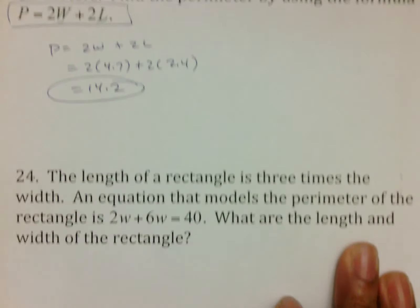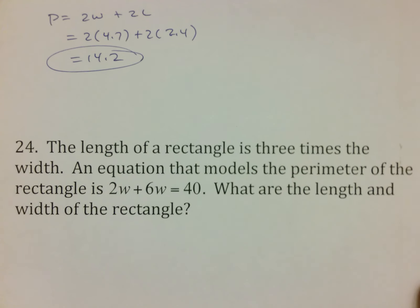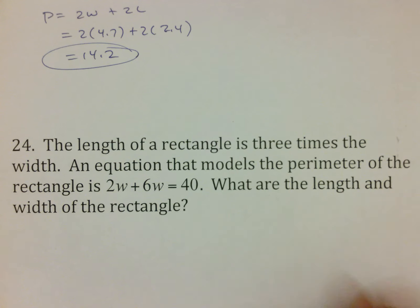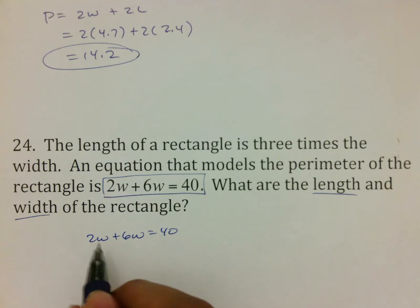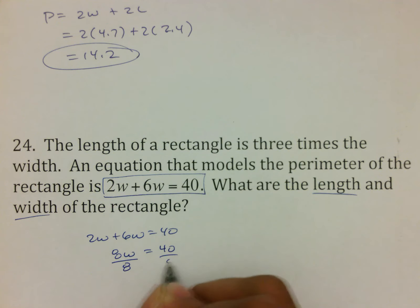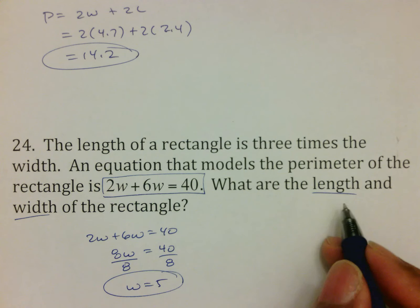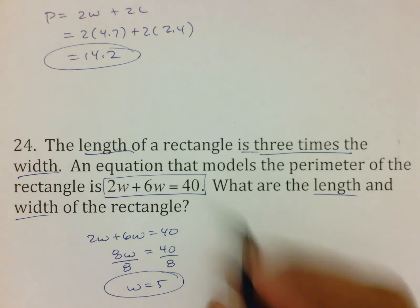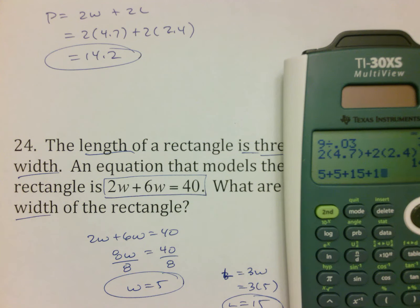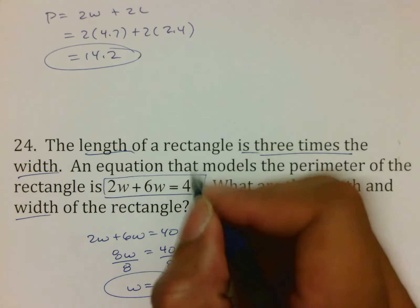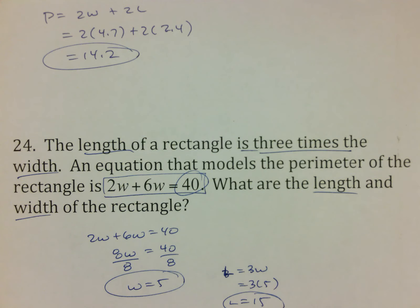The last question for this worksheet. Length of a rectangle is 3 times the width. An equation that models the perimeter is 2w plus 6w equals 40. They want length and width of the rectangle. This is an equation, not an actual formula. It means that we solve it by putting our w's together. We divide by 8 to get that w is 5, and that's one dimension, but it wants length and width. Notice it says the length is 3 times the width, so that means length is going to be 3w, which means it's 3 times 5, or 15. So the width is 5, the length is 15. You can check that by going 5 plus 5 plus 15 plus 15. Notice that gives us 40, which is what it says the perimeter should be.